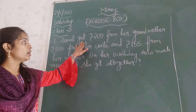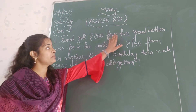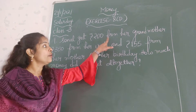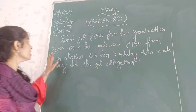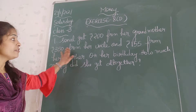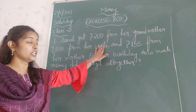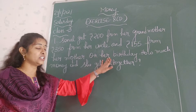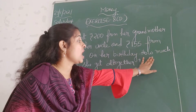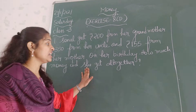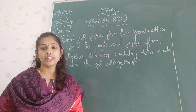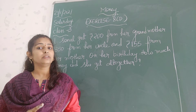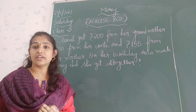Sonan got rupees 200 from her grandmother, rupees 350 from her uncle, and rupees 155 from her mother on her birthday. So three of them have given her money. Now, how much money did she get altogether?